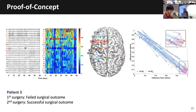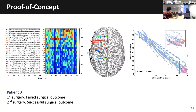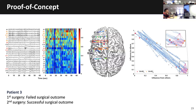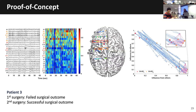Question: shouldn't an epileptic onset zone be a source? Before a seizure, yes — that was our hypothesis. But not in between seizures. That was our hypothesis: they're inhibited normally in between. And then right before a seizure, they turn into sources.